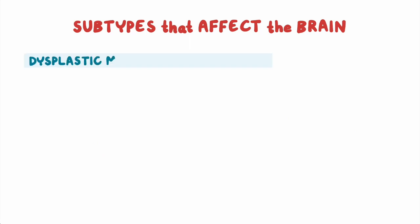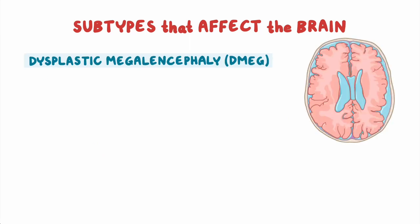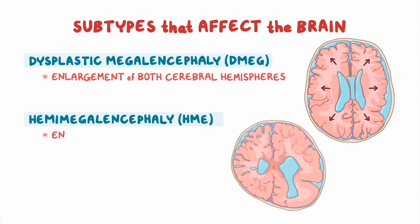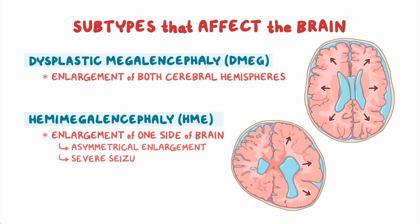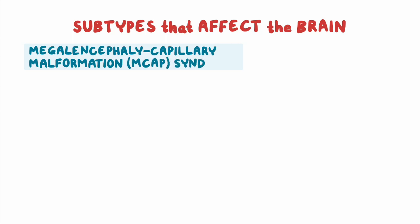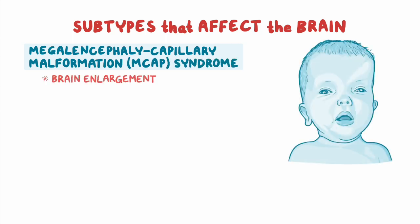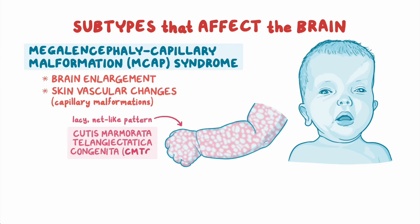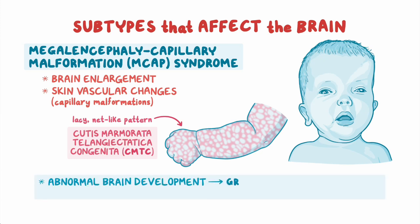Conditions include dysplastic megalencephaly, known as DMEG, which causes enlargement of both cerebral hemispheres. Hemimegalencephaly, or HME, causes enlargement of one side of the brain, resulting in asymmetrical enlargement and can lead to severe seizures. Megalencephaly capillary malformation, or MCAP, syndrome involves brain enlargement in conjunction with skin vascular changes, usually capillary malformations, which may take on a particular lacy net-like pattern called cutis marmorata telangiectatica congenita, or CMTC. Abnormal brain development can lead to growth hormone deficiency, which may cause low blood sugar levels.